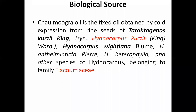Coming to the biological source of Chalmogra oil: it is a fixed oil obtained by cold expression — remember, we are not applying heat. It is obtained from the ripe seeds of Hydnocarpus kurjii or Hydnocarpus wightiana, or other species of Hydnocarpus such as Hydnocarpus anthelmintica, Hydnocarpus ticta, and Hydnocarpus heterophylla. These species are all used to extract this oil.